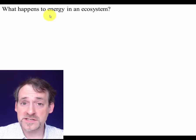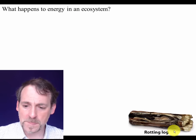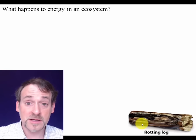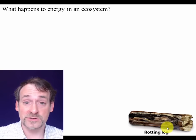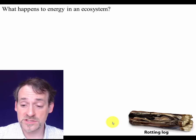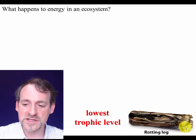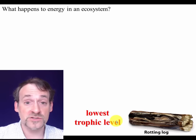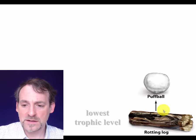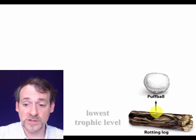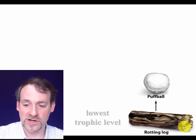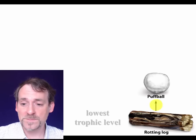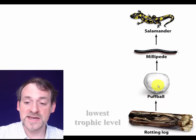What happens to energy once it is captured by plants and stored in their tissues as net primary productivity? It eventually becomes available to consumers of some kind. For example, a rotting log has a lot of high-energy chemical compounds available to certain consumers. The organism that originally captured the energy is referred to as the lowest trophic level in a food chain. An organism that feeds on it is a consumer — a puffball, whose fine thread-like structures infiltrate the rotting log, is on the next trophic level.